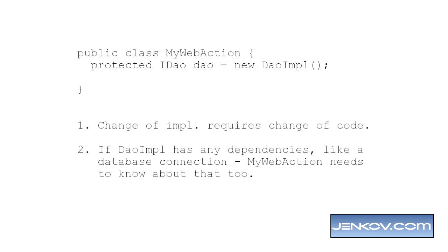This kind of design has two problems. First of all, if you need a different implementation of the iDAO interface, you actually need to change the code — you need to change the myWebAction code. And second of all, if DAO input has any dependencies which it cannot configure itself from the inside — let's say the DAO input needed a database connection — then myWebAction actually also needs to know about the DAO input's dependencies. This way, dependencies tend to spread out through the application to components that don't really have anything to do with them.